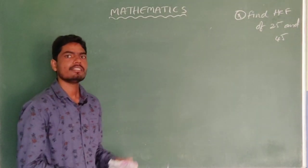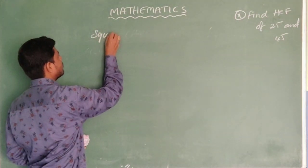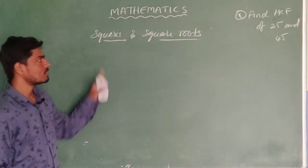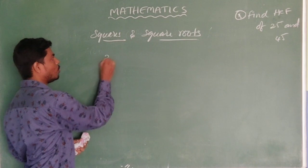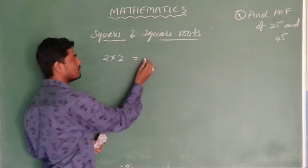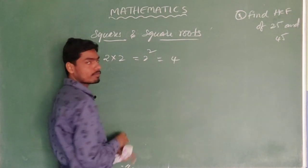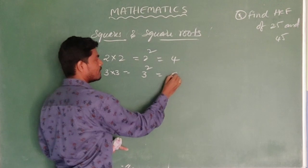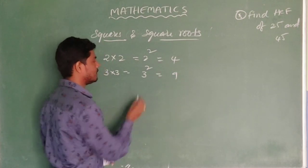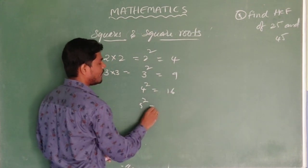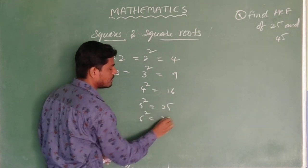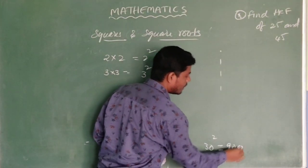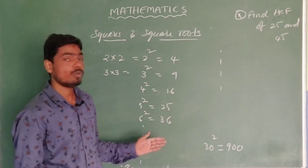The next topic is squares and square roots. A square is nothing but the product of a number multiplied by itself. For example, 2 × 2 is 2 squared, which equals 4. Then 3 squared means 3 × 3, which equals 9. Similarly, 4 squared is 16, 5 squared is 25, and 6 squared is 36. You can work out at home up to 30 squared, which equals 900. These numbers are very helpful in mathematics to solve problems easily. Everyone should learn square numbers from 2 to 30.